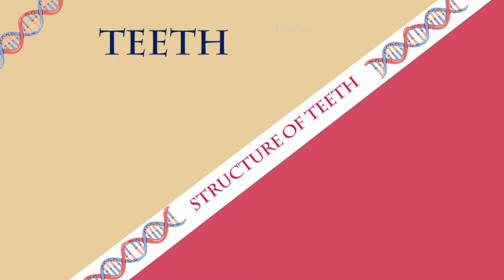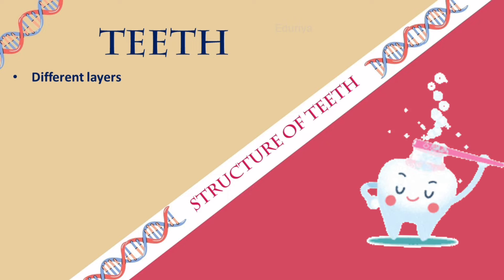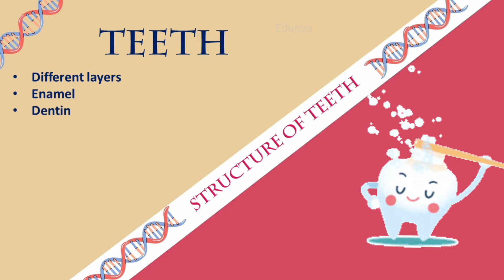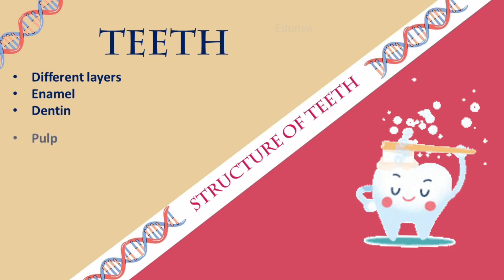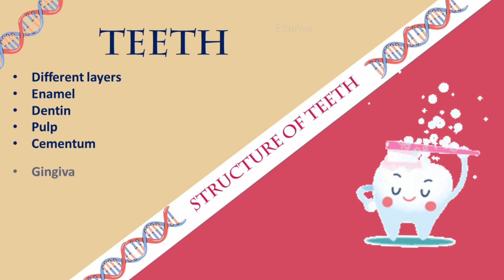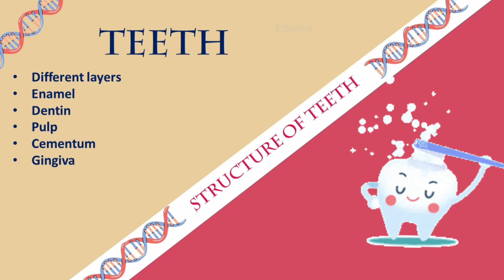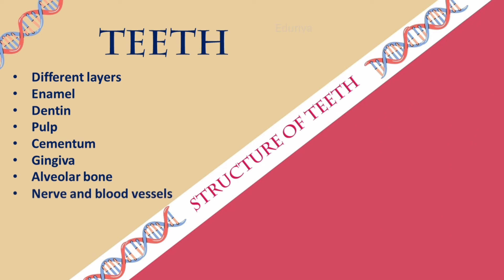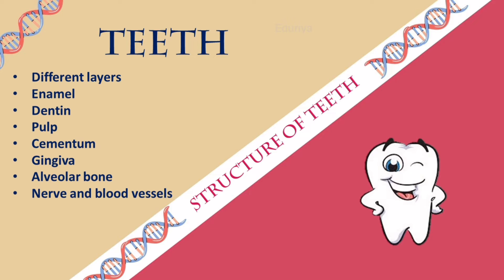Teeth are made up of different layers. They are enamel, dentin, pulp, cementum, gingiva, alveolar bone, nerves and blood vessels. Let's see them one by one in detail.